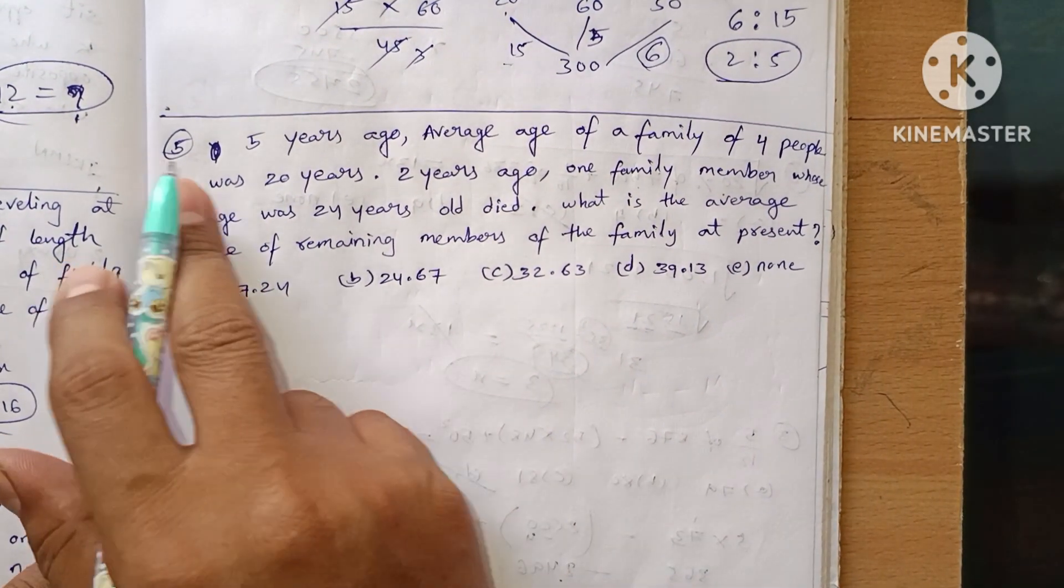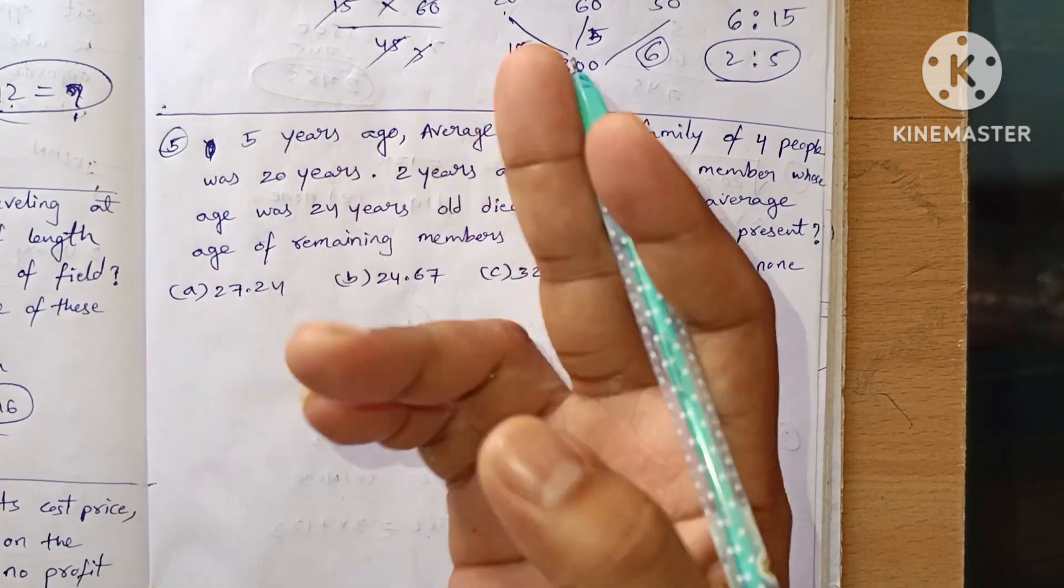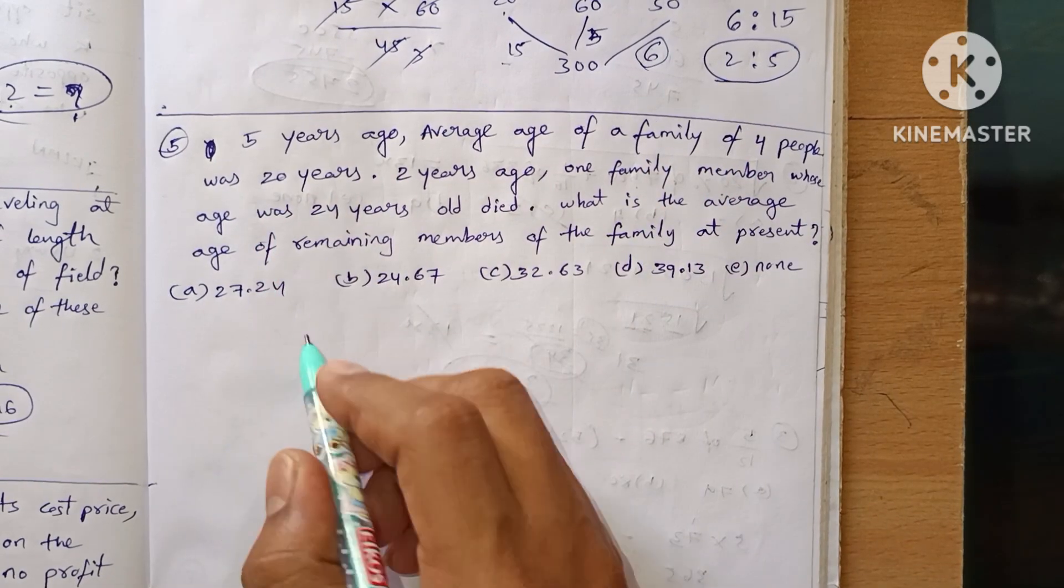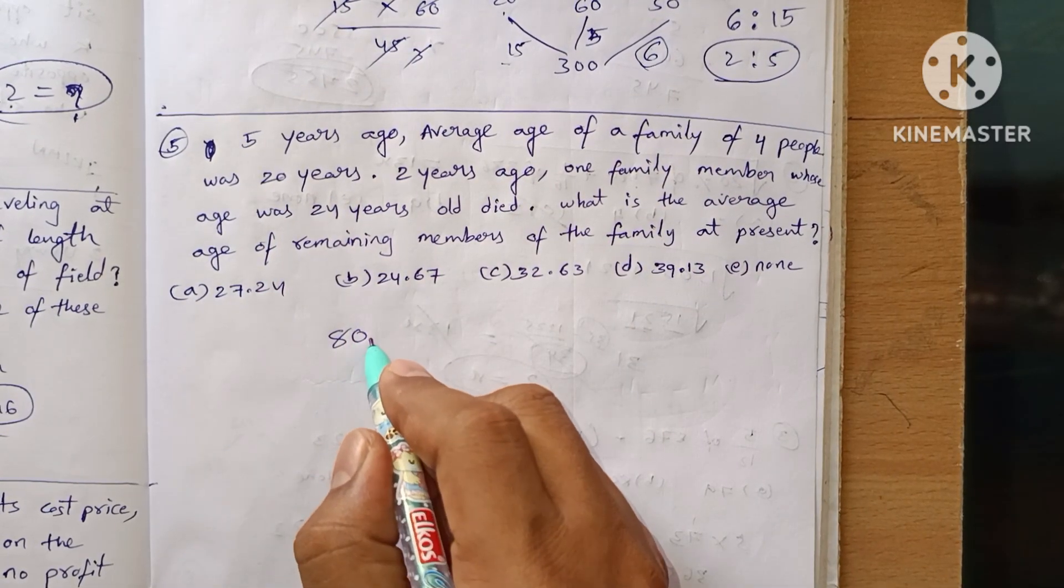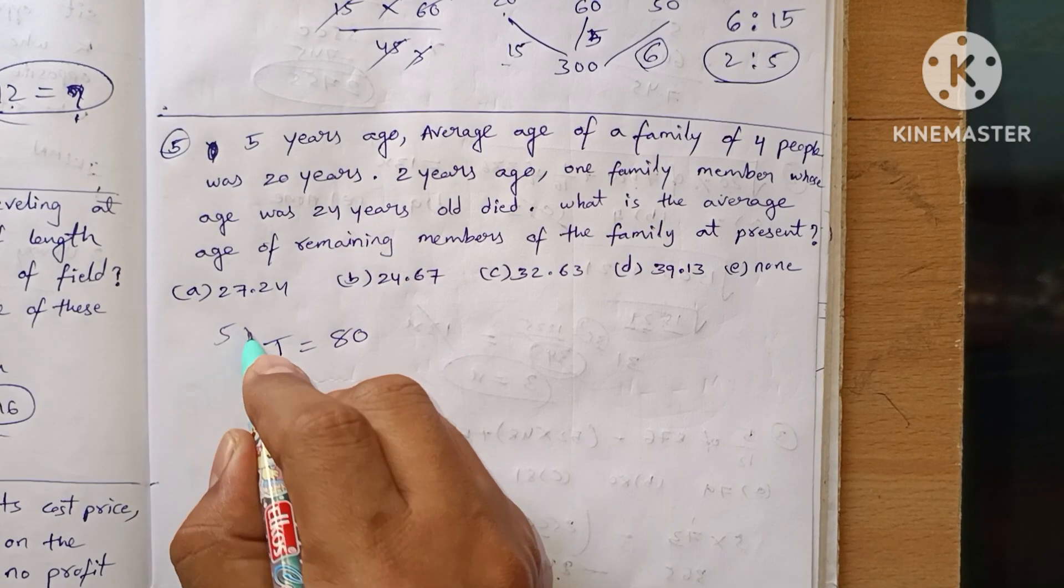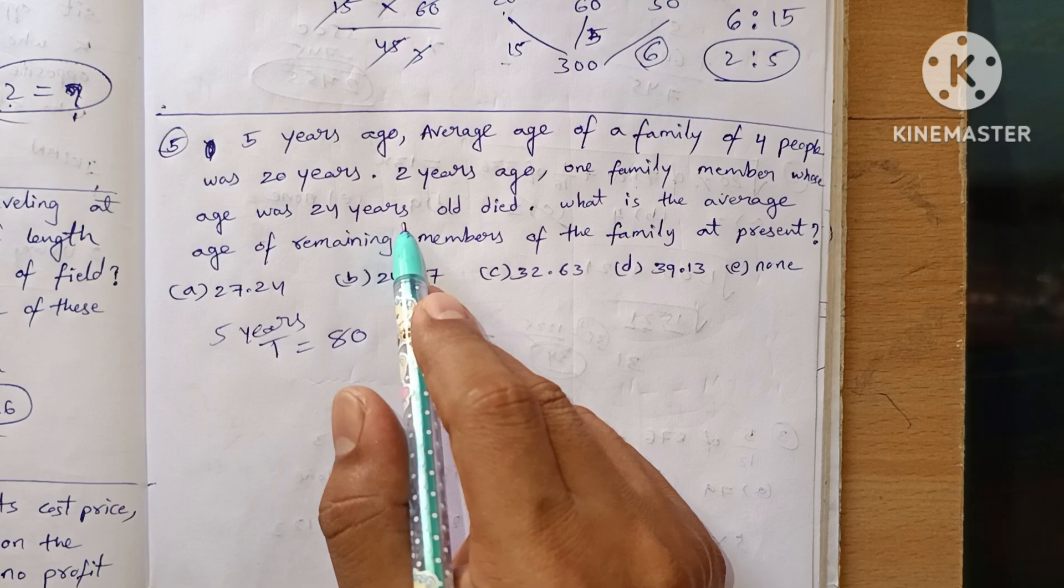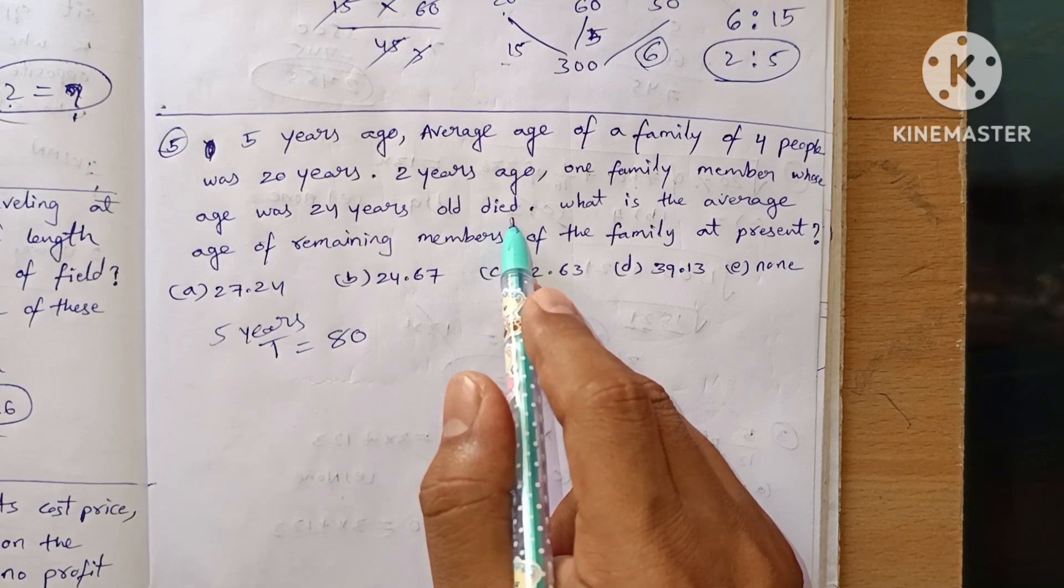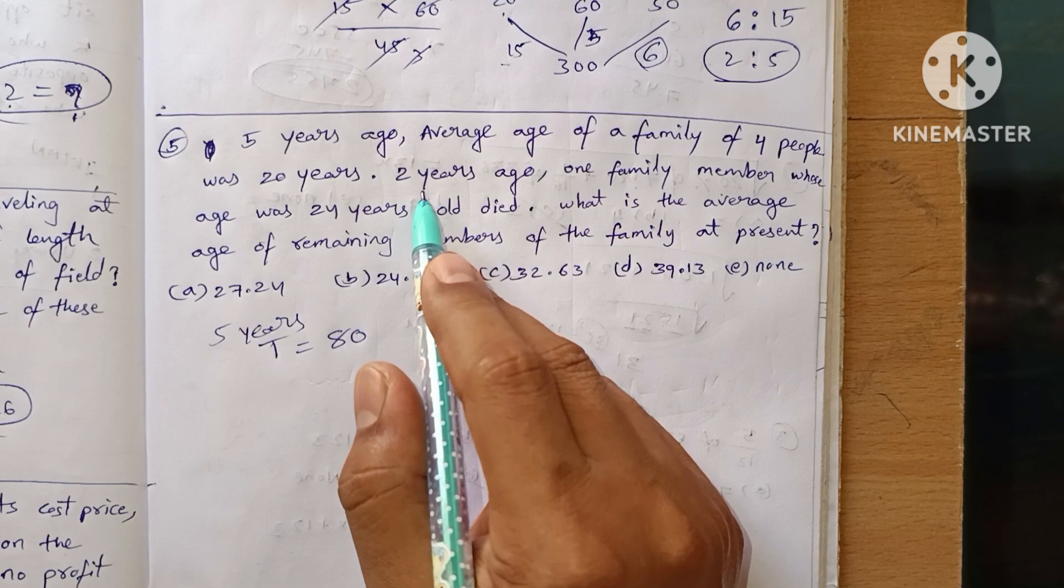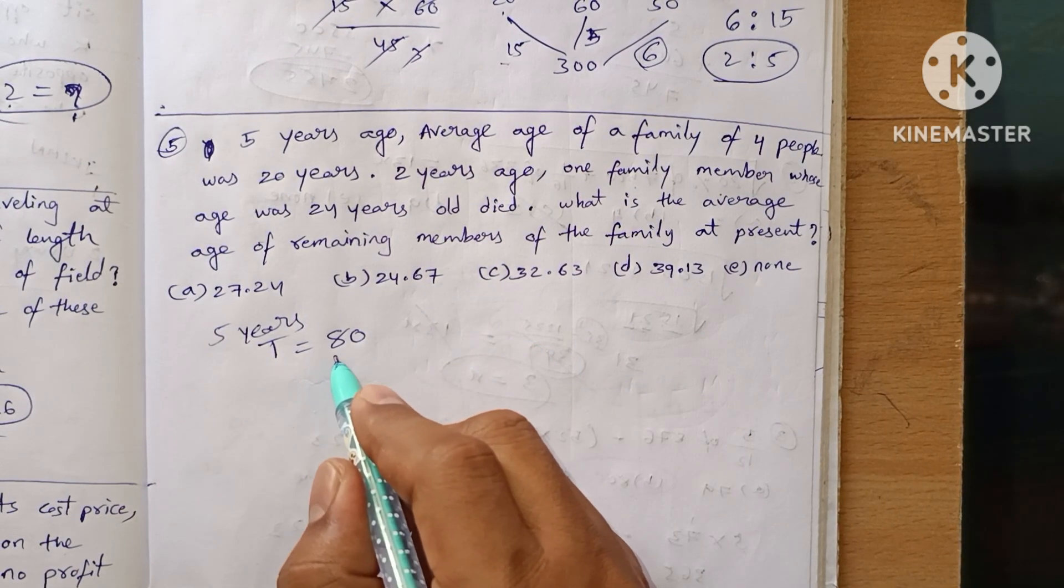Now question number five. Five years ago, the average age of a family of four people was 20 years, which means the total age was 4 × 20 = 80. Five years ago their total was 80. Now two years ago, one family member whose age was 24 years old died.